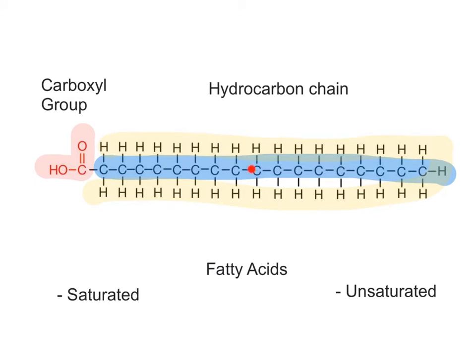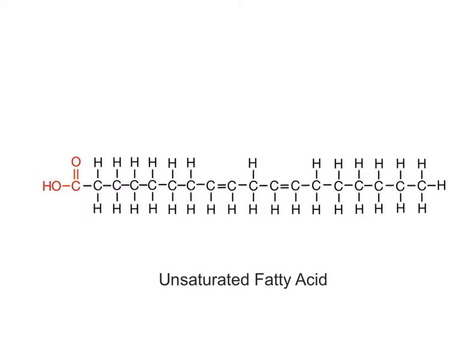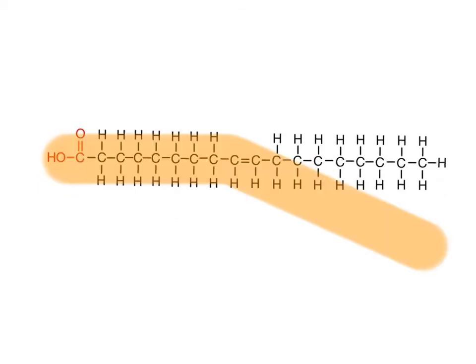Because of these single covalent bonds, saturated fats have a straight, linear shape that allows them to pack very closely together. In contrast, unsaturated fatty acids contain one or more double covalent bonds between the carbon atoms of their hydrocarbon chains. So this means that unsaturated fats are not completely saturated with hydrogen atoms, and have a kink, or bend in the chain at the location of the double bond. This bent chain structure helps prevent unsaturated fats from packing closely together.